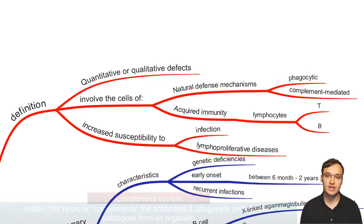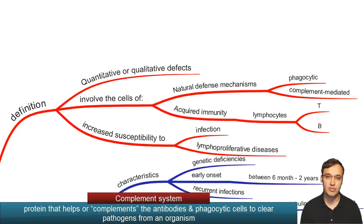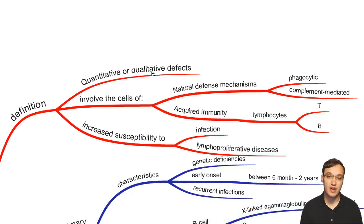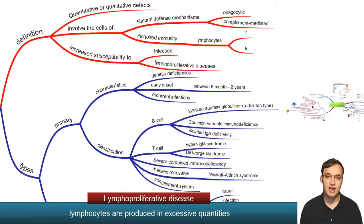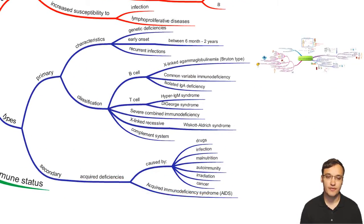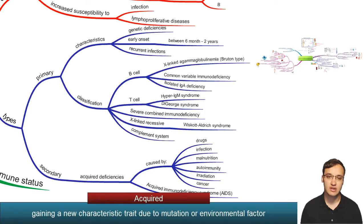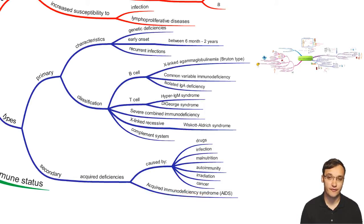The quantitative defect means we have a reduced number of these cells, or a qualitative defect, meaning the function of these cells is impaired. Patients will then be susceptible to infection and to lymphoproliferative diseases. The types of immunodeficiency are primary or secondary — secondary being an acquired deficiency, and primary being a genetic deficiency.